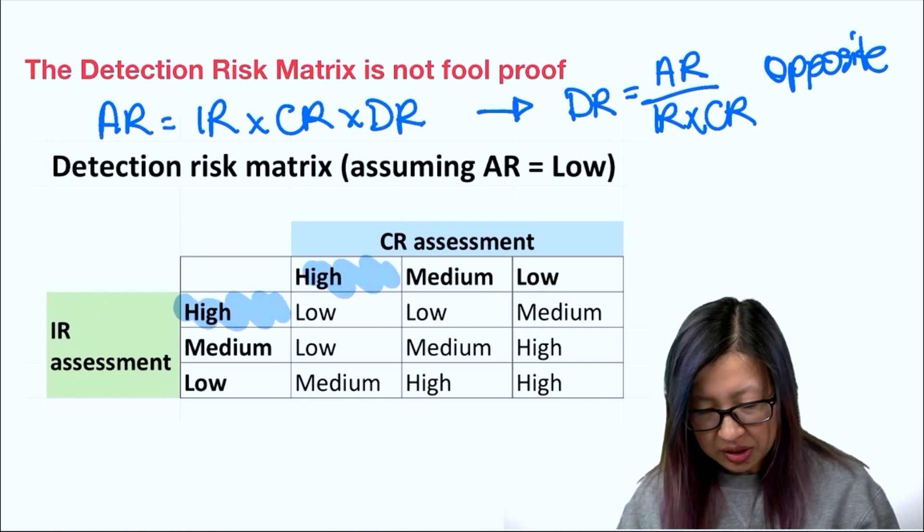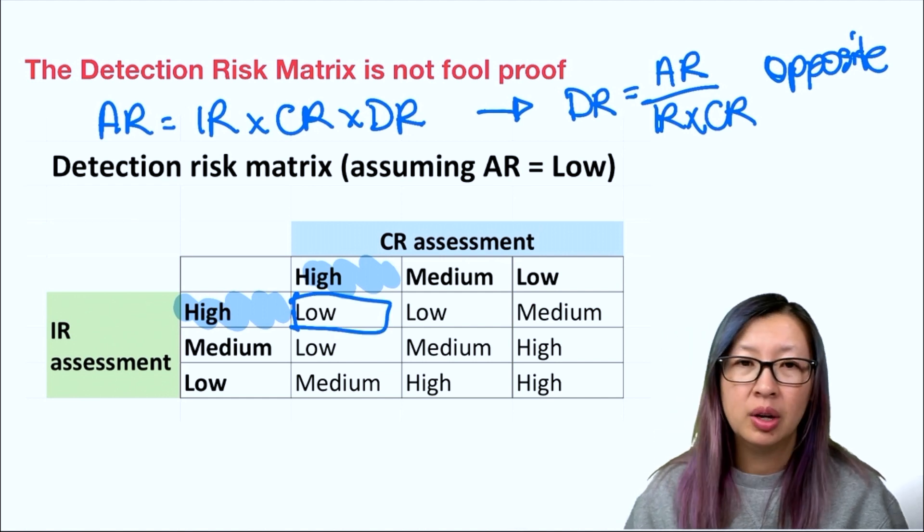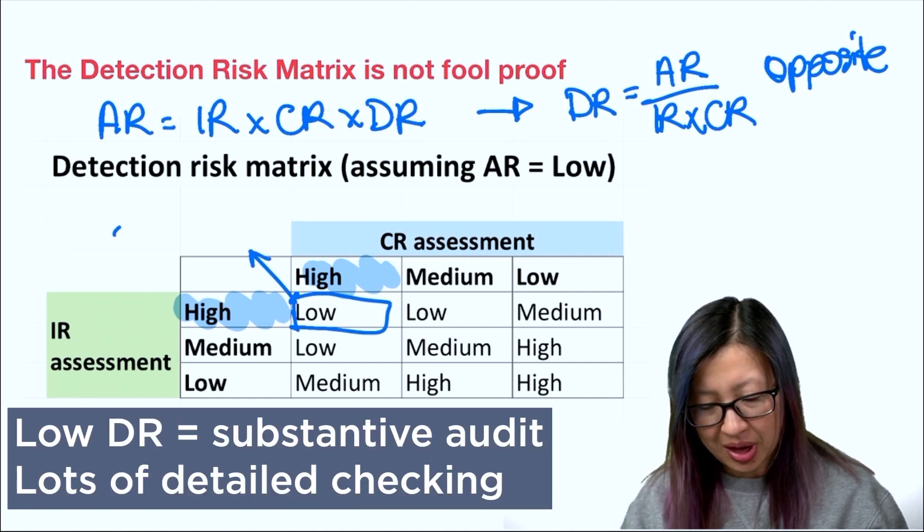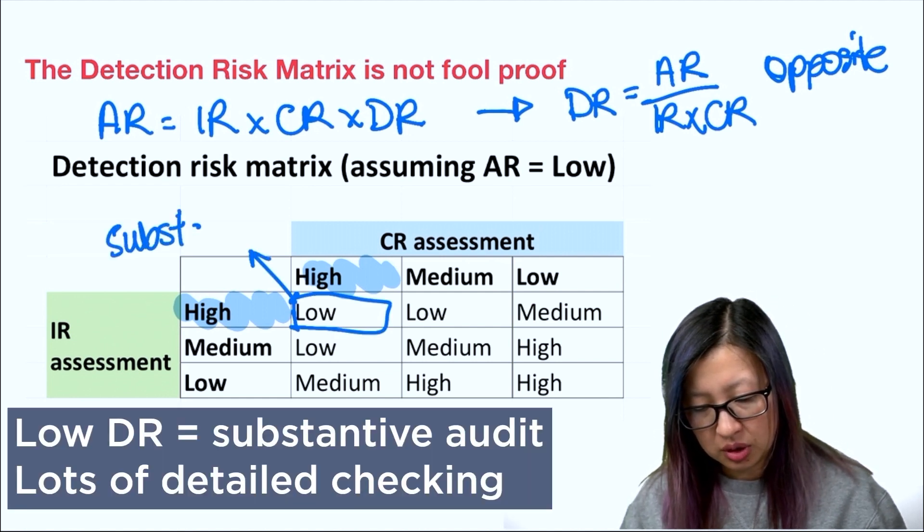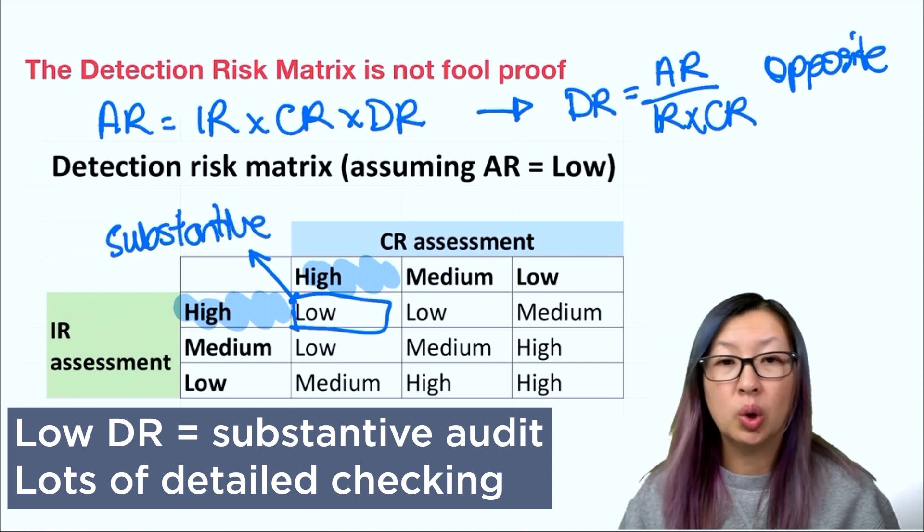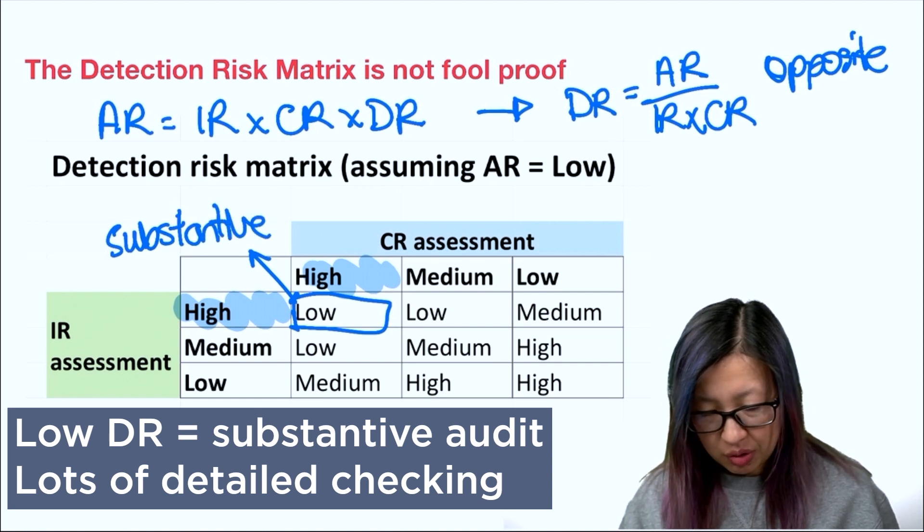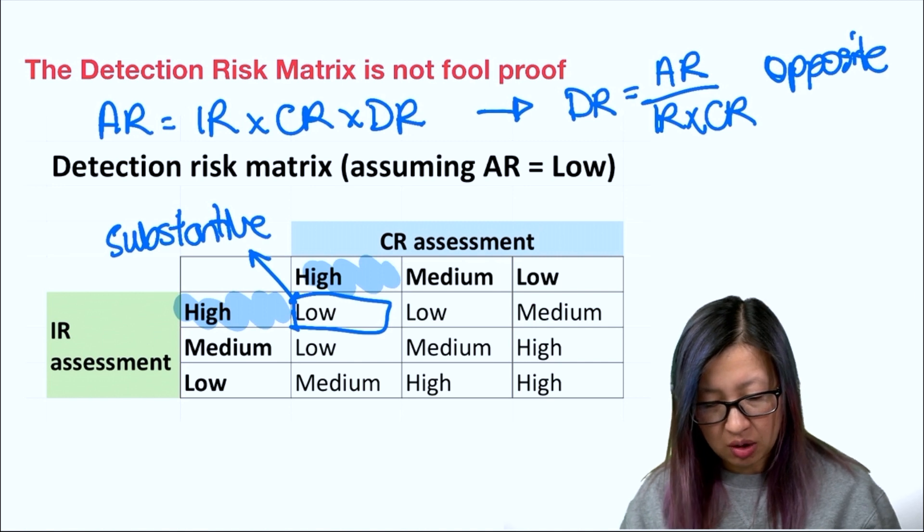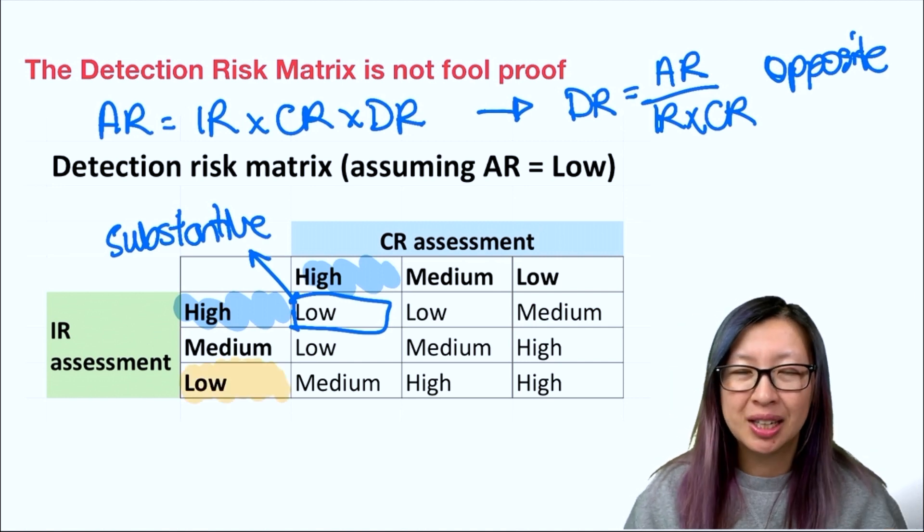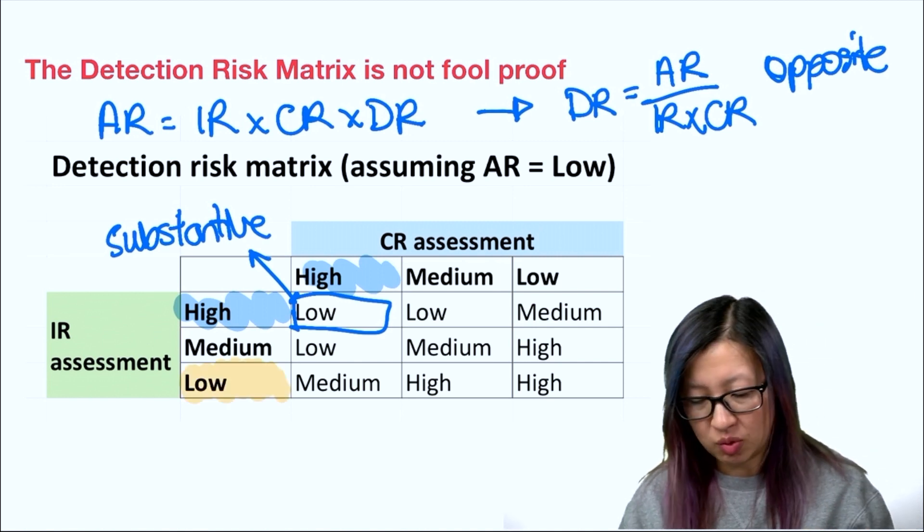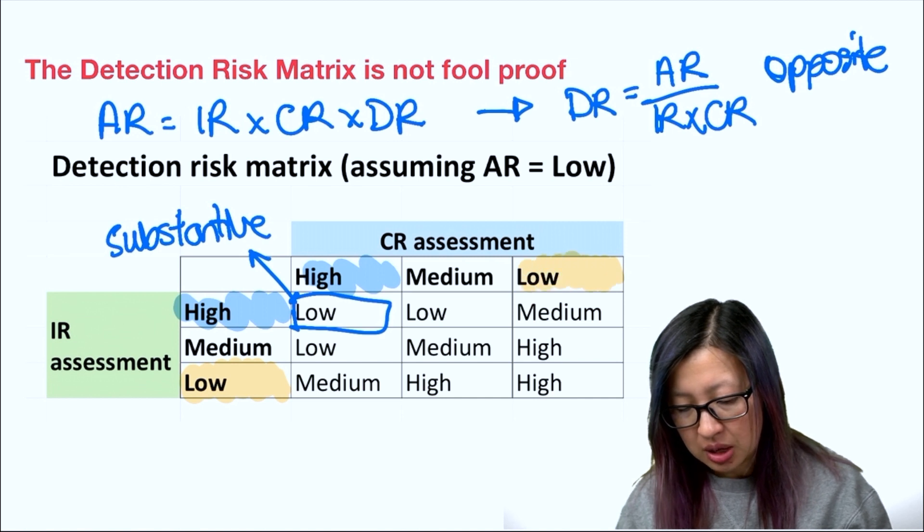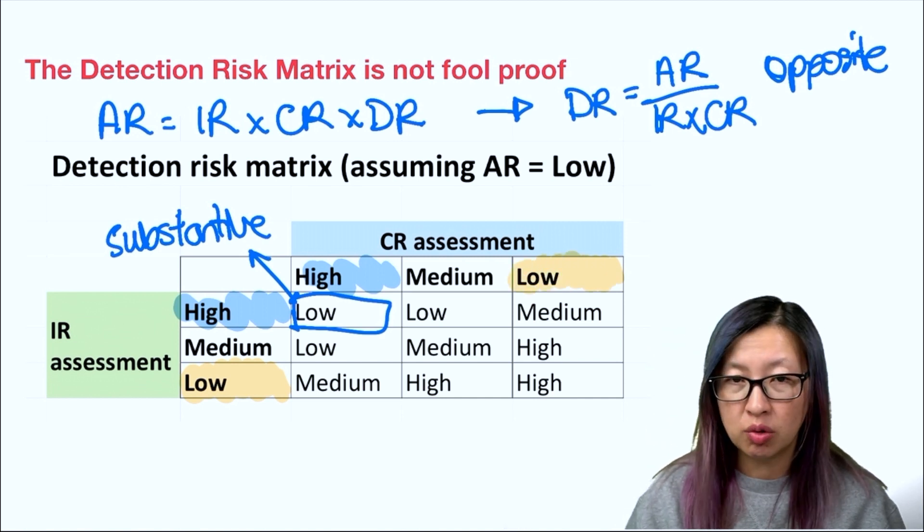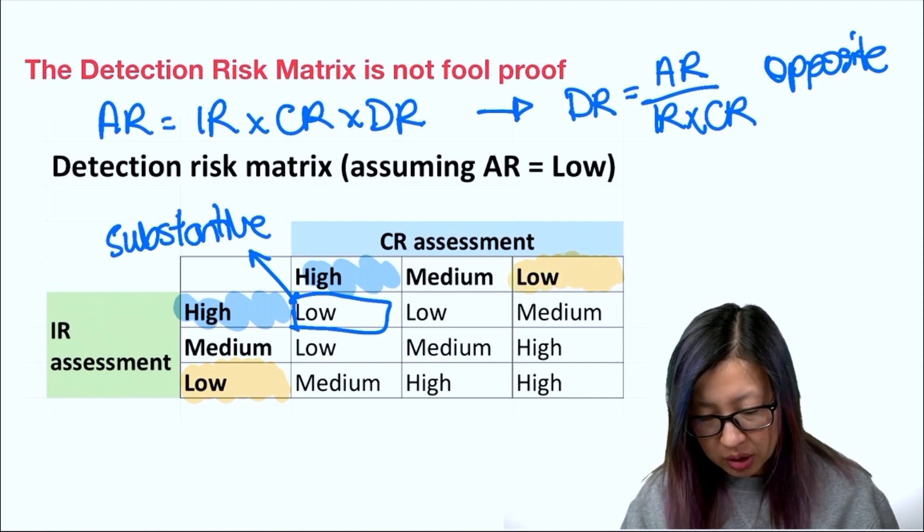High and high gives you that substantive audit strategy. Now, if we look at the opposite end of the scale, low inherent risk, really low risk of that industry and of that business, and low control risk, which means that we have very good internal controls.